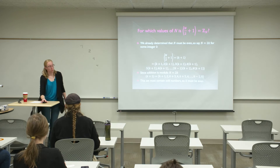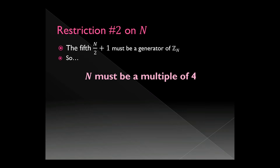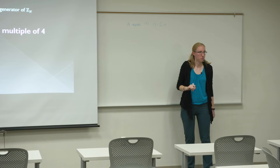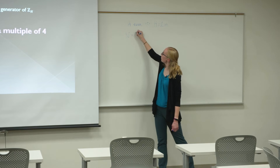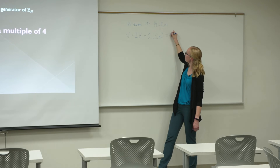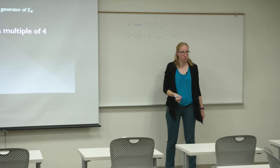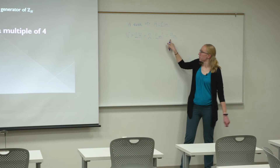K being even means K = 2M for some integer M. But remember N = 2K, so N = 2·(2M) = 4M. All of that was to say: N must be a multiple of 4. That's the second restriction.